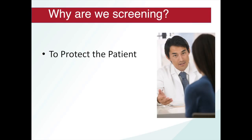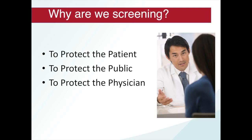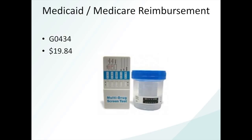We screen to protect the patient, to protect the public, and to protect the physician — and urine drug testing is just one part of that screening process. Medicaid and Medicare in North Carolina reimburse office-based urine drug testing using code G0434, with a reimbursement rate of about $19.84. These tests cost between $4 and $8 depending on the number of panels, so this is not a major revenue source, but it does pay for the test itself and a little extra.